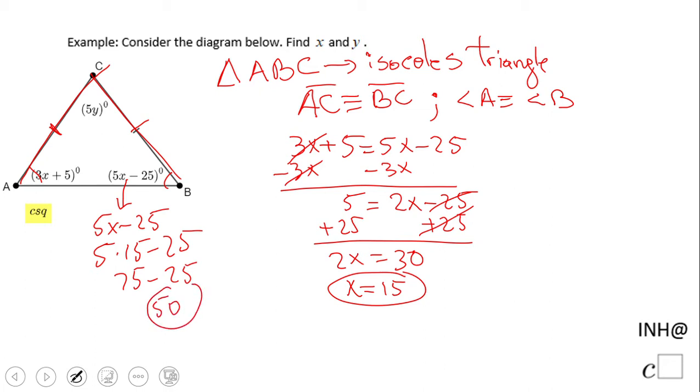Angle A and angle B are congruent, so they both measure 50 degrees. How are we going to find y? We have a theorem that says the measure of angle A plus the measure of angle B plus the measure of angle C equals 180 degrees. The sum of the angles in a triangle is 180.